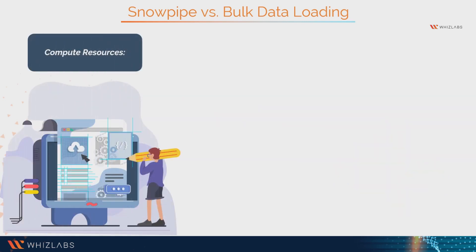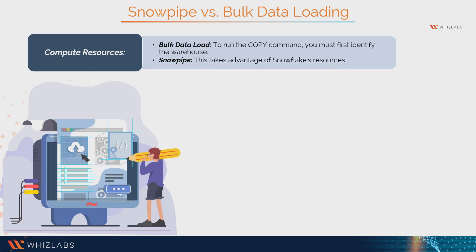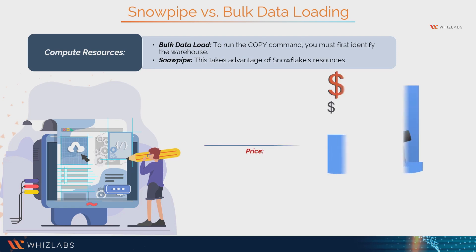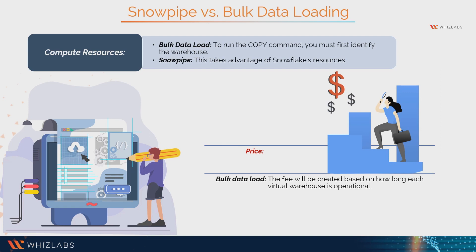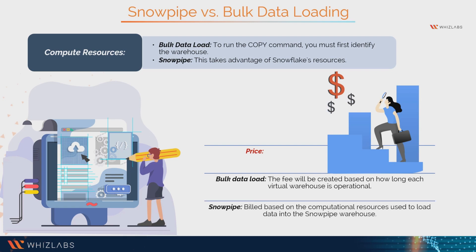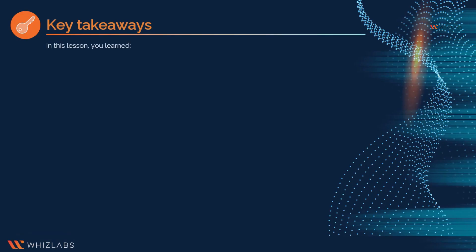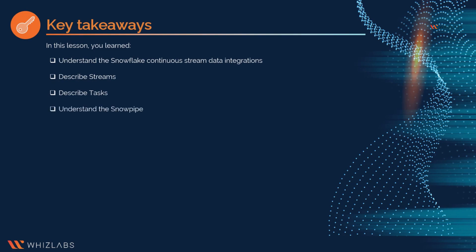Compute resources: in bulk data load, you must first identify the warehouse to run the copy command, taking advantage of Snowflake's resources. Pricing: in bulk data load, the fee is based on how long each virtual warehouse is operational; Snowpipe is billed based on the computational resources used to load data. In this lesson, you learned about Snowflake continuous stream data integrations, streams, tasks, and Snowpipe.